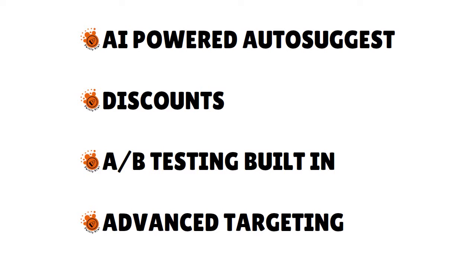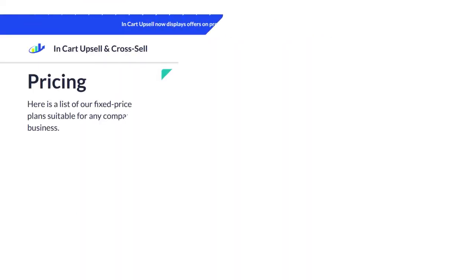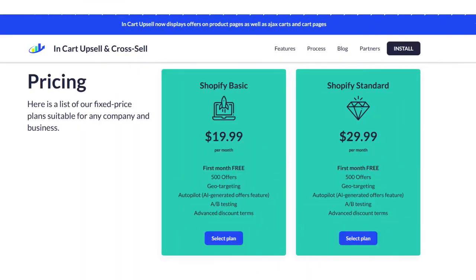We love the AI-powered auto-suggest, built-in discounts, and A/B testing. You can actually create two versions of your upsell and run A/B tests. It has advanced targeting — this is really good. In terms of pricing, you can see it on the screen.